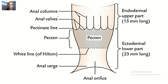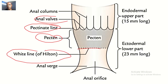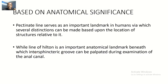To summarize on this picture: you can see the anal valves — those curved lines. The pectinate line is beneath the anal valves. Then there is the pecten, and at the lower border of the pecten we have the white line of Hilton. You could draw this picture to have everything in your head.